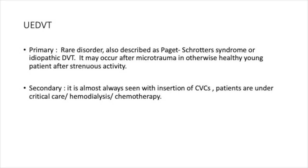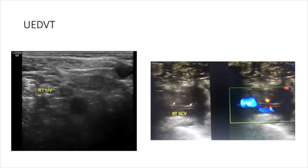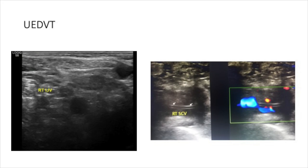Primary upper extremity DVT is a rare disorder, also described as Paget-Schroetter syndrome or idiopathic DVT. It may occur after microtrauma in otherwise healthy individuals after strenuous activity. Secondary DVT is almost seen after insertion of central venous catheters in patients under critical care, hemodialysis, and chemotherapy. This is an example where you are lucky enough to directly visualize the thrombus — the vein is almost obliterated in the internal jugular — and here you can see a partial thrombus occluding the right subclavian vein.